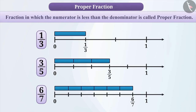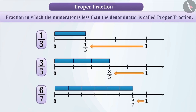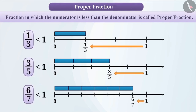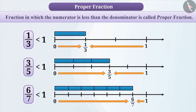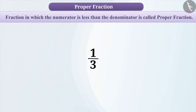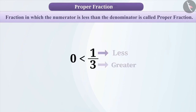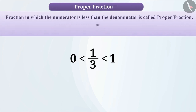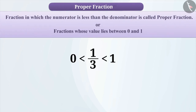If we observe these representations on the number line, all fractions on the left side of 1 are smaller than 1, and all fractions on the right side of 0 are greater than 0. We can say that when the denominator is greater than the numerator, the value of the fraction is greater than 0 but less than 1. A fraction whose value lies between 0 and 1 is called a proper fraction.